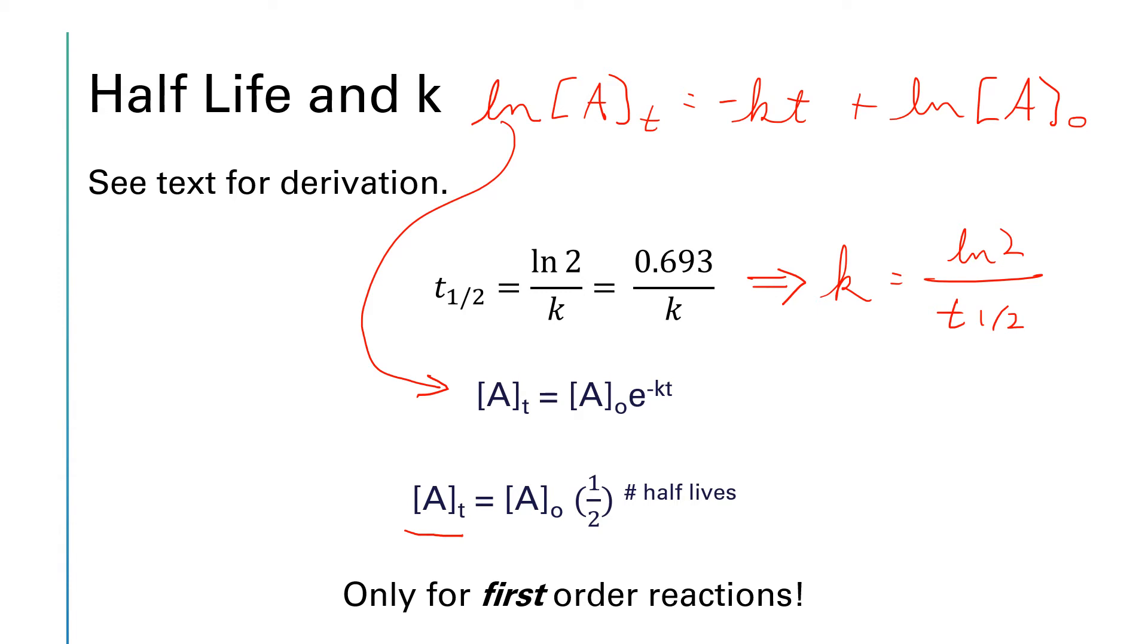And one other equation that can be derived from all of this is that the amount that you have left at time t will be equal to A naught times one half raised to the number of half-lives. So the number of half-lives just means the elapsed time. Let me write that out over here. The number of half-lives will be equal to the elapsed time divided by the length of a single half-life, t sub one half.